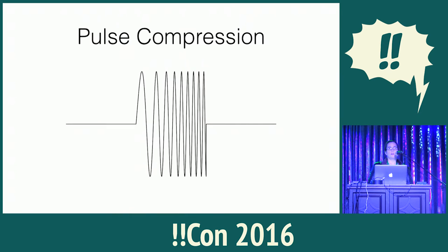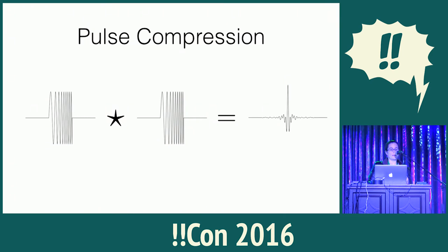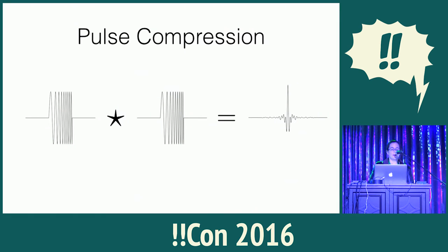So instead, we transmit a chirped signal that starts at a low frequency and ramps up to a higher one. If you self-correlate a chirp, you get a much narrower peak with the same peak power. So we've maintained our penetration ability through the ice, but you have much better vertical resolution — rather than tens of meters, we can see features that are about three meters apart.